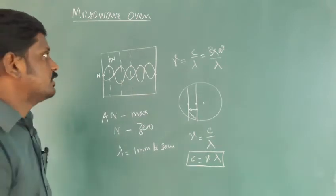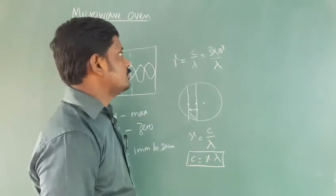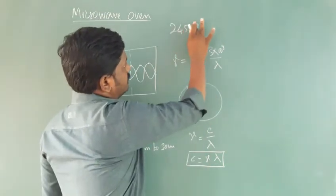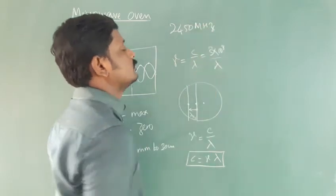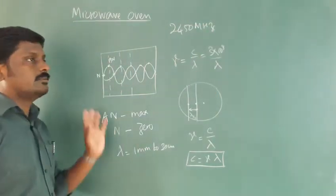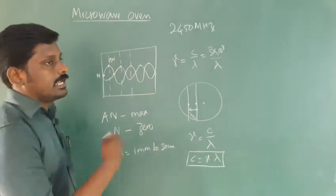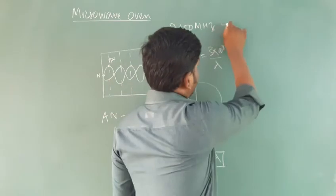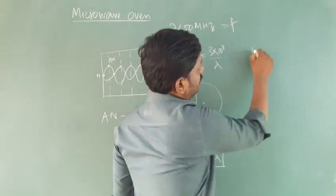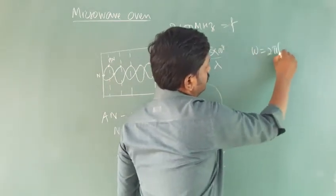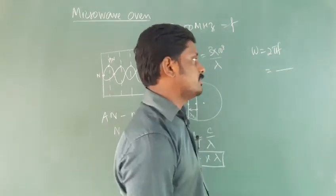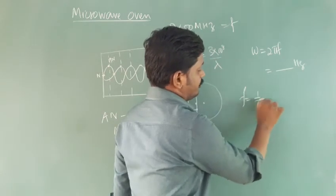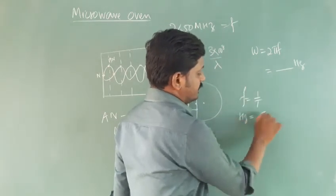There is a problem given: a magnetron produces a frequency of 2450 megahertz. What is the magnetic field strength required to rotate the electron in a circular path? The formula is: angular frequency ω = 2πf. If you substitute the values, you will get the angular frequency. Frequency equals 1/T.